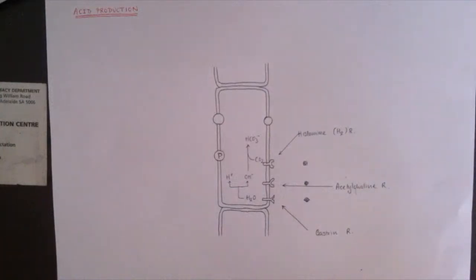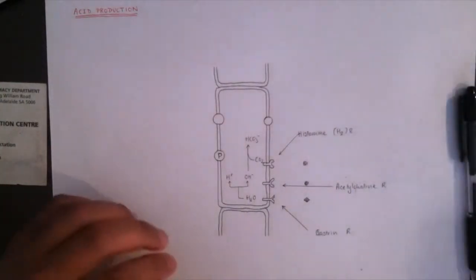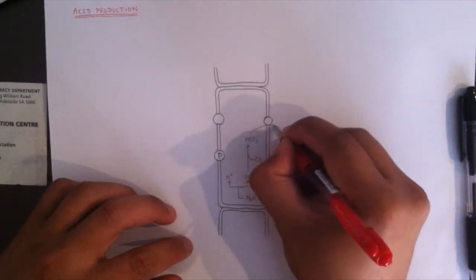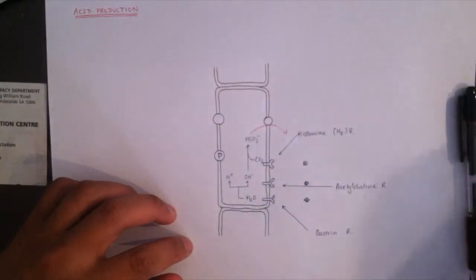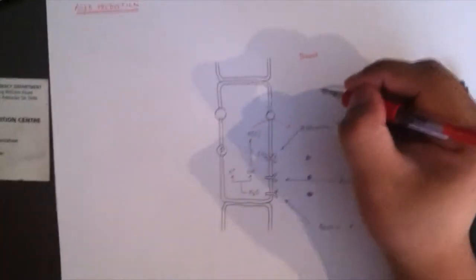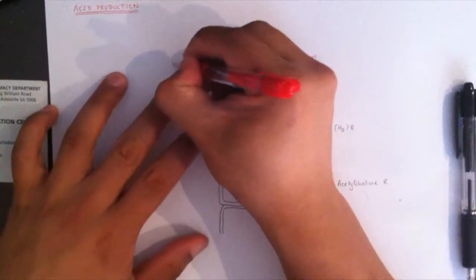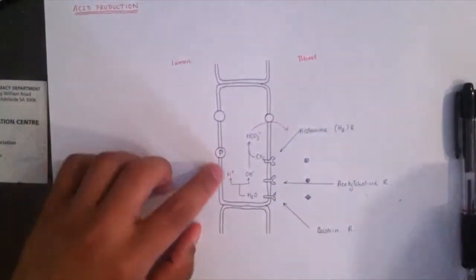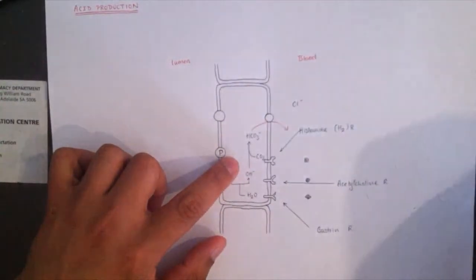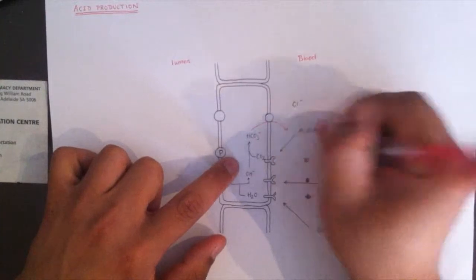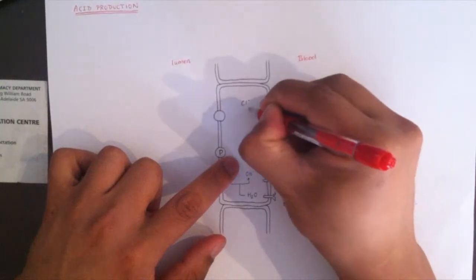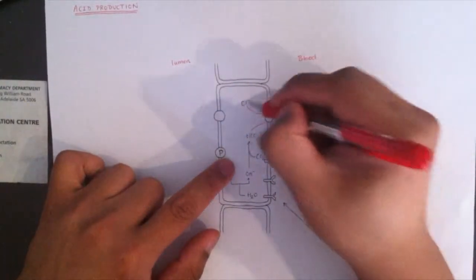This bicarbonate ion is then antiported — so this side is blood, and this side here is the lumen of the stomach. It gets antiported with chloride: chloride is transported into the cell while the bicarbonate ion is transported out into the blood.